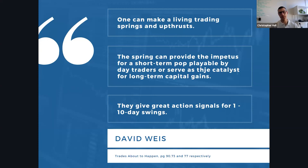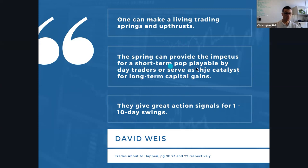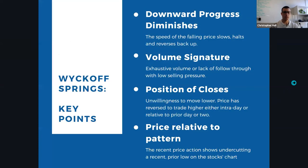There are quotes that are really quite critical. David Weiss says: 'One can make a living trading springs and up thrusts' — that's a phenomenal quote he uses twice in the book. He also says the spring can provide the impetus for a short-term pop, playable by day traders, or serve as the catalyst for long-term capital gains. They give great action signals for one to ten trading day swings.